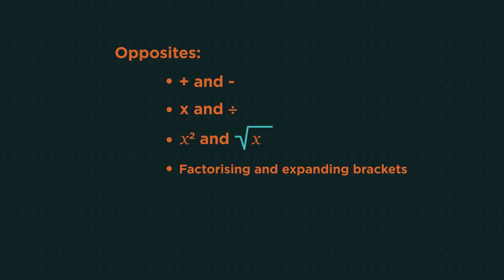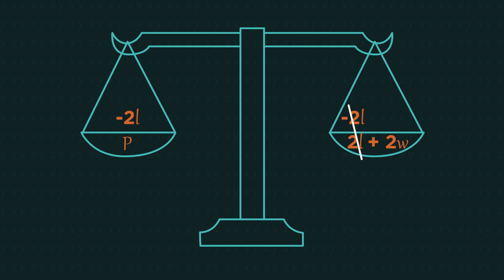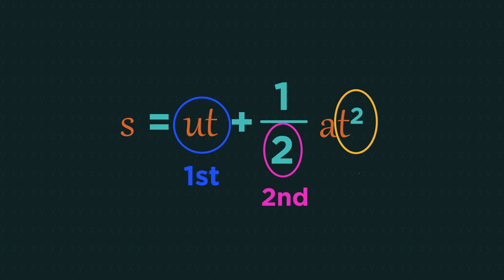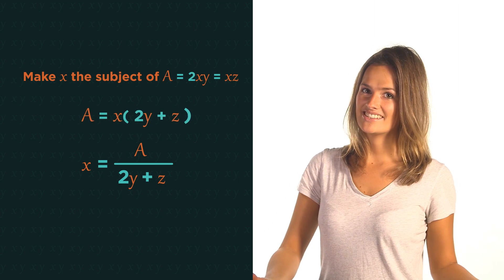So you should know that we always use opposites, that you do everything to both sides and cancel on the one side. Take the rearranging step by step starting with the things that are least connected to your chosen subject. When the subject appears twice in a formula we need to factorize.